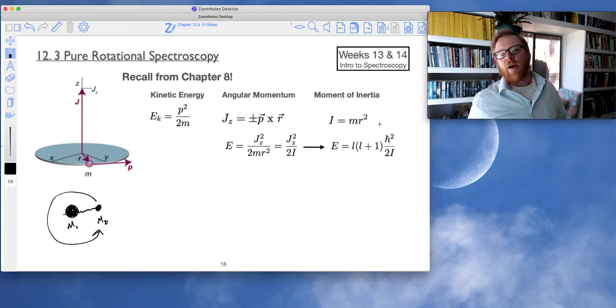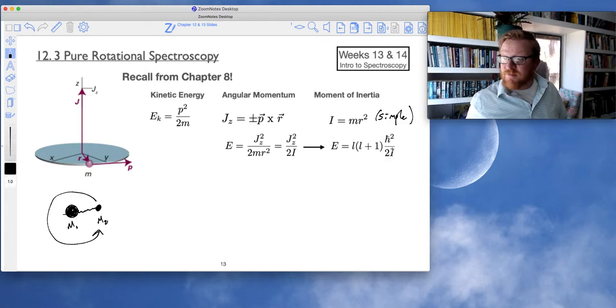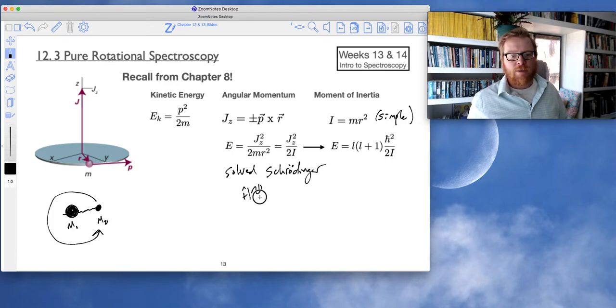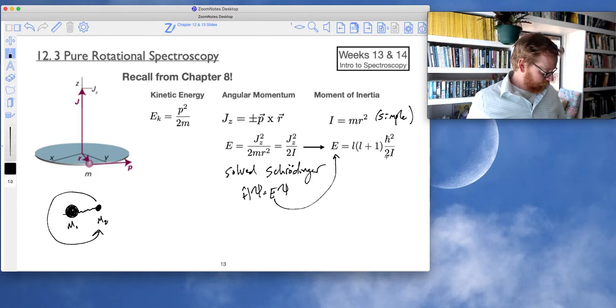I equals mr squared for simple rotors. So that would be a linear rotor and nothing else. All of the other rotors have much more complicated moments of inertia. And so what's important to note, when we solved Schrödinger, write h psi equals e psi, this is the solution that we got for energy: L times L plus 1 times h bar squared over 2 times i.